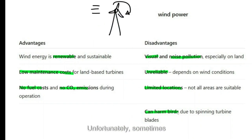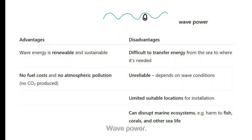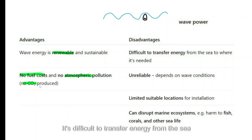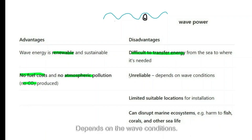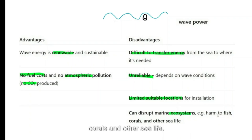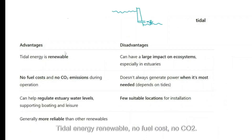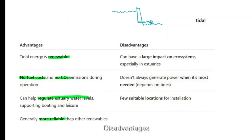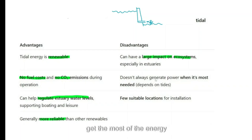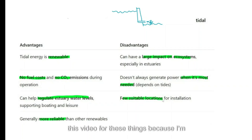Wind power advantages: renewable, low maintenance cost, no fuel cost, no CO2. Disadvantages: visual and noise pollution, unreliable as it depends on wind, limited suitable locations — ideal sites such as coastlines are expensive land — and turbine blades can harm birds. Wave power advantages: renewable, sustainable, no fuel cost, no atmospheric pollutants. Disadvantages: difficult to transfer energy to land, unreliable, limited suitable locations, and can disrupt marine ecosystems including fish and corals. Tidal energy advantages: renewable, no fuel cost, no CO2, can help regulate estuary water levels, and is more reliable than other renewables due to predictable patterns. Disadvantages: large ecosystem impact, doesn't always generate power when most needed, and few suitable locations.